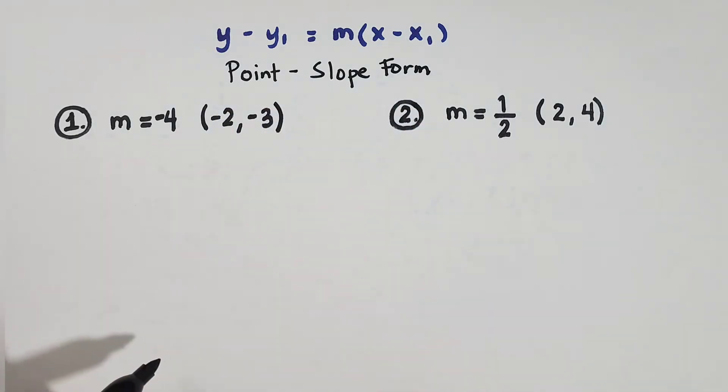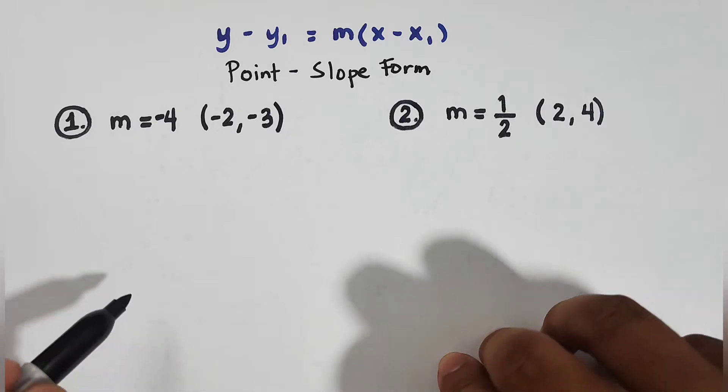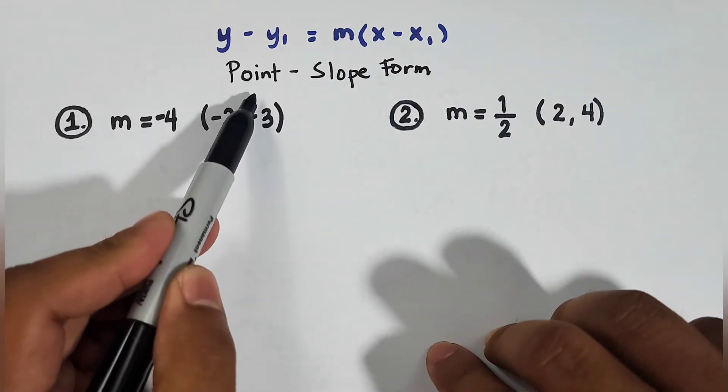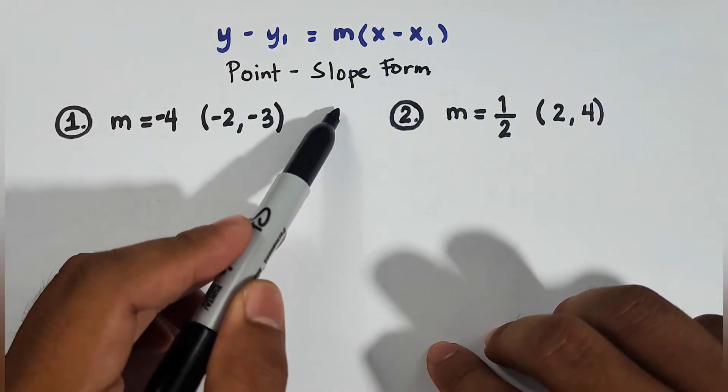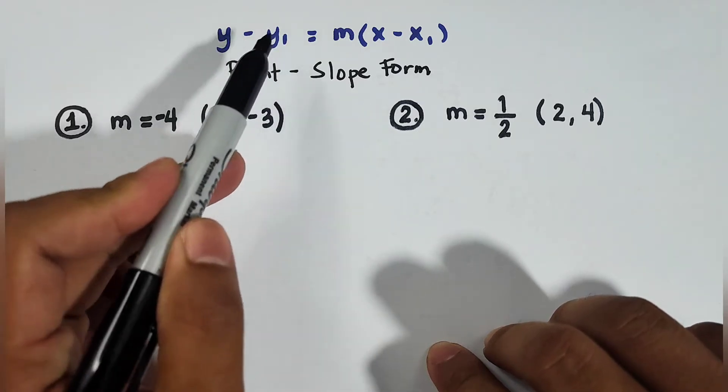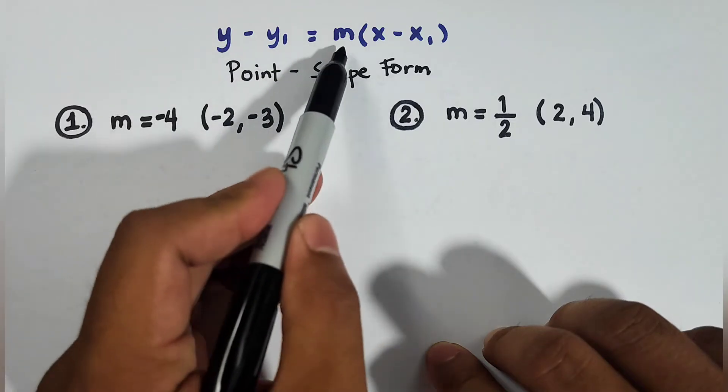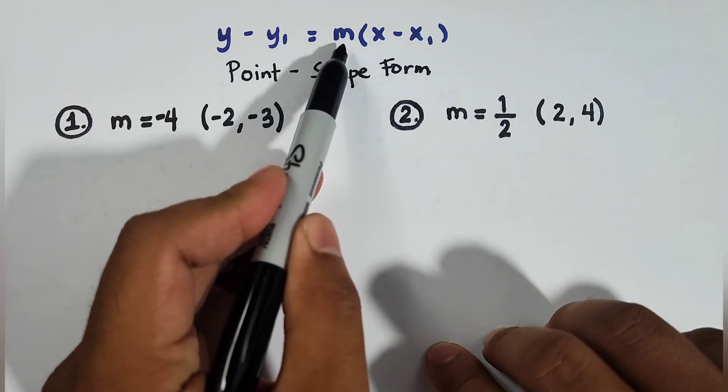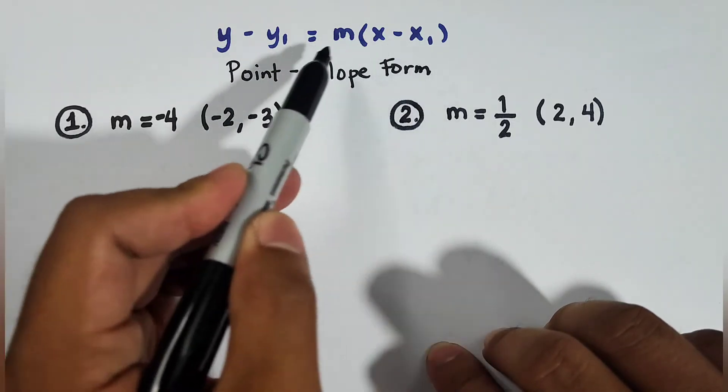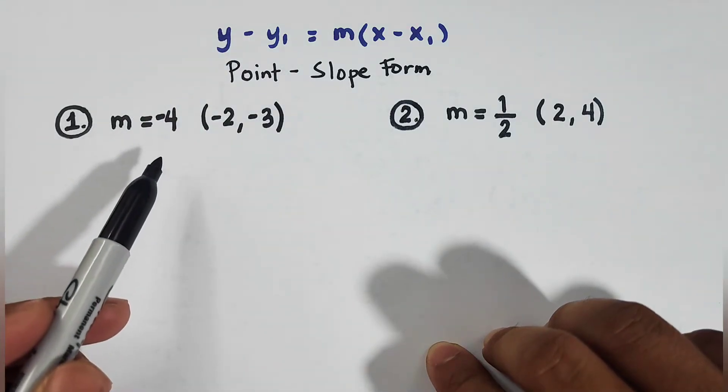So what is the criteria for us to use the Point-Slope Form? Basically, you need the coordinates of a point and the slope. What we have here is y minus y sub 1 equals m times x minus x sub 1. Here, the variable m represents the slope. x sub 1 and y sub 1 are the coordinates of your point.